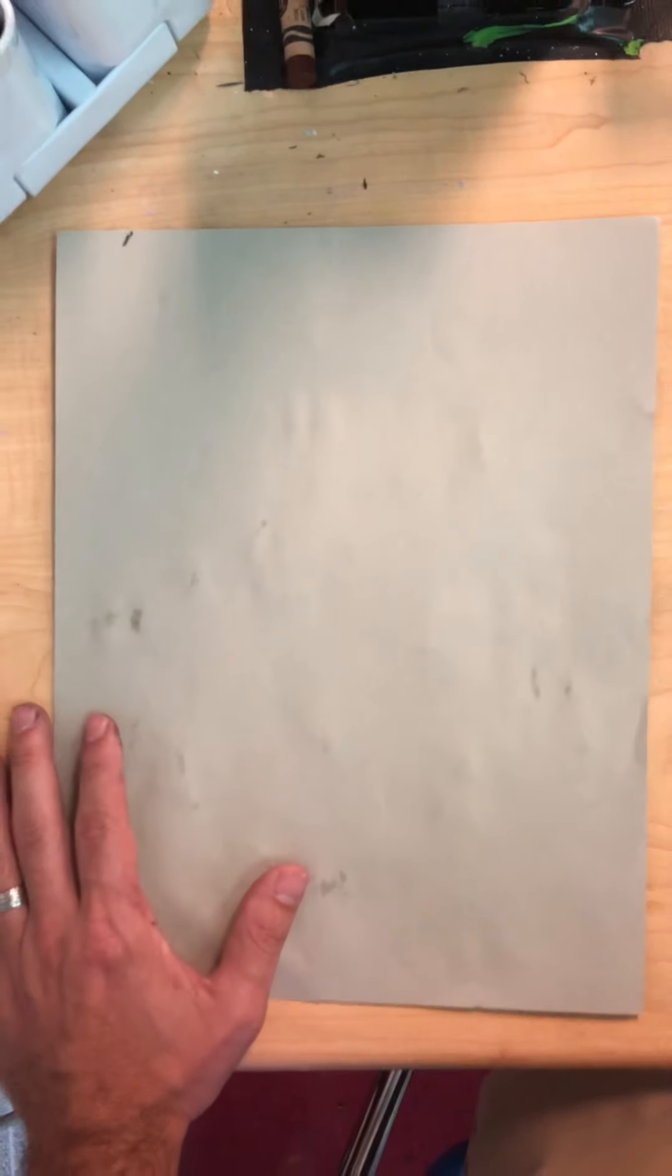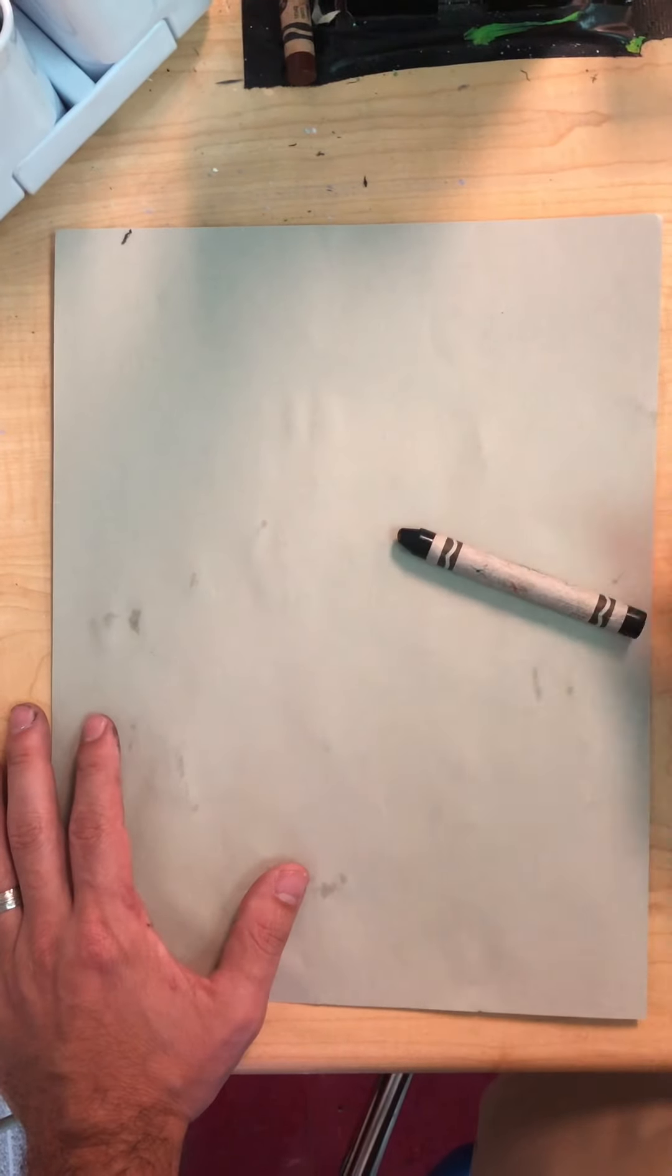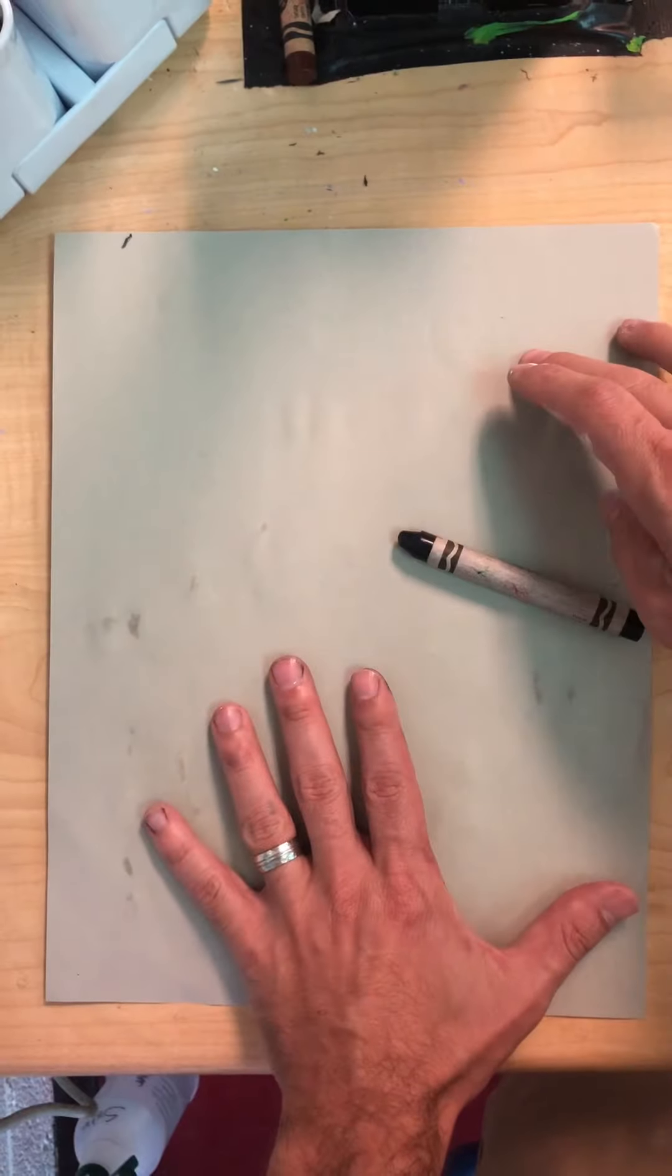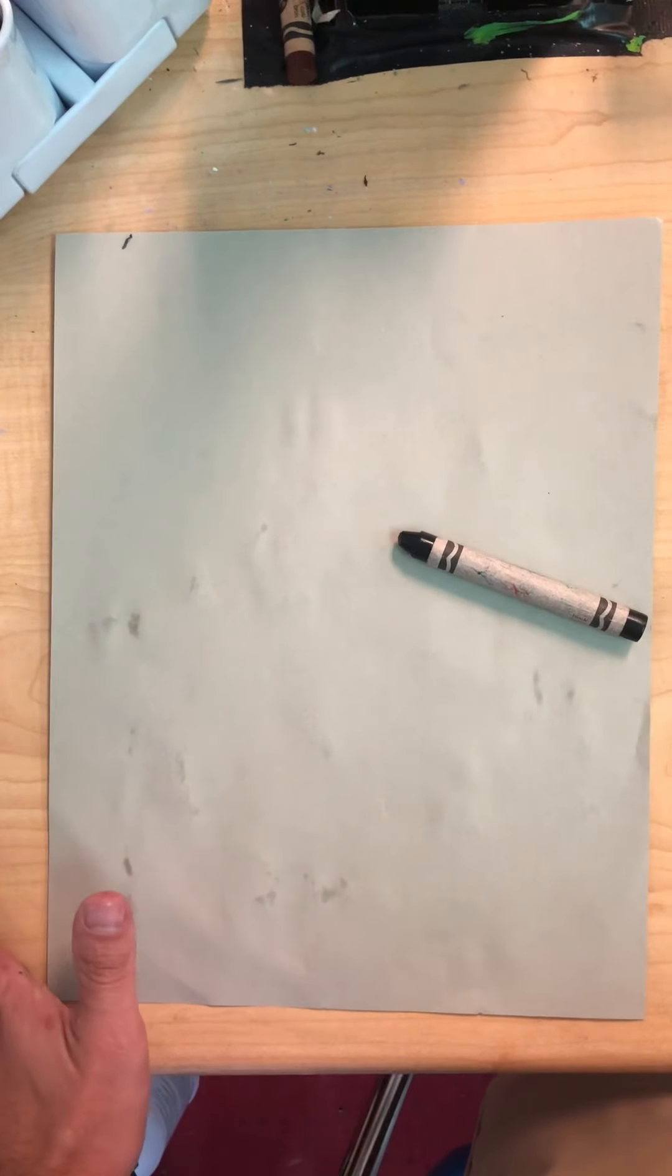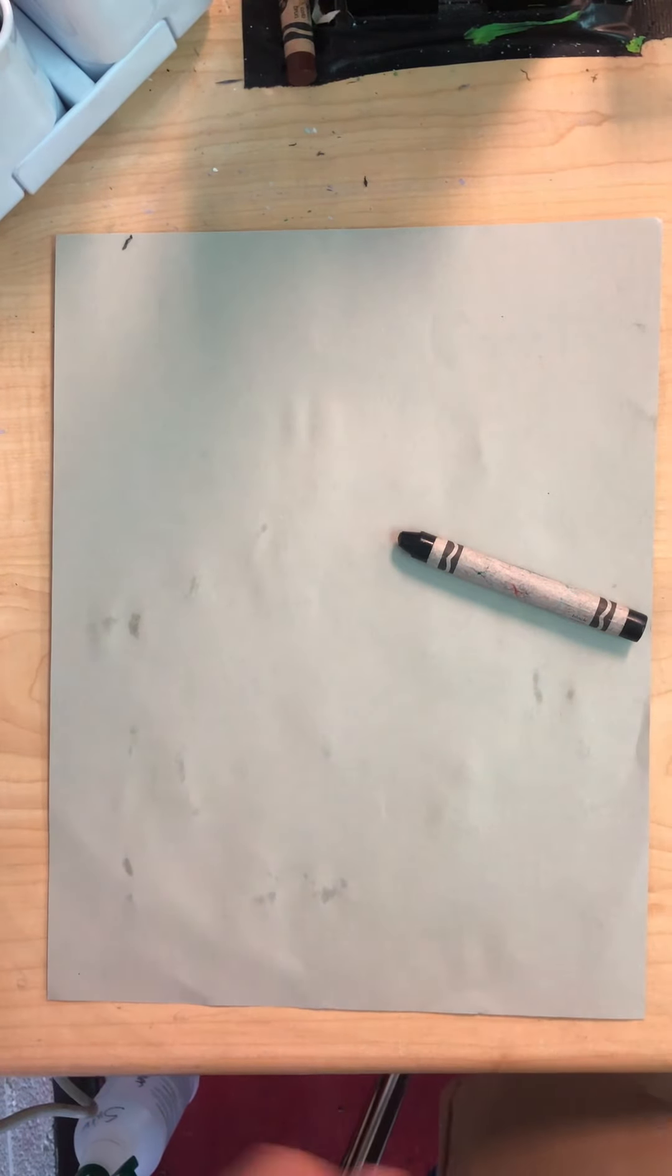To get started, we're all going to need to have a black crayon and a piece of light-colored construction paper. Pink, gray, light blue are all good options. We will be using a white crayon or a white pastel later in the lesson, but for now a black crayon is all we're going to need.